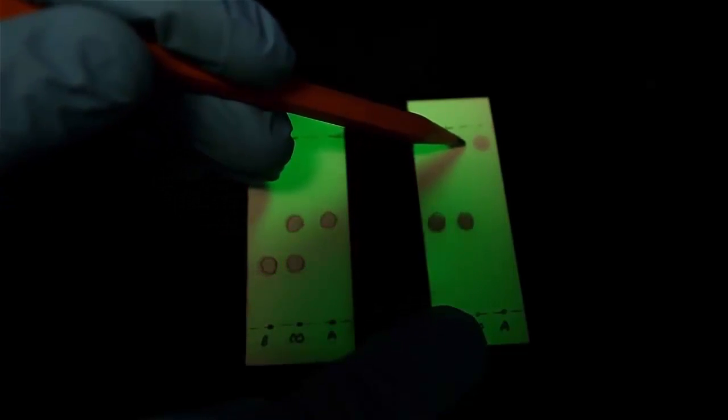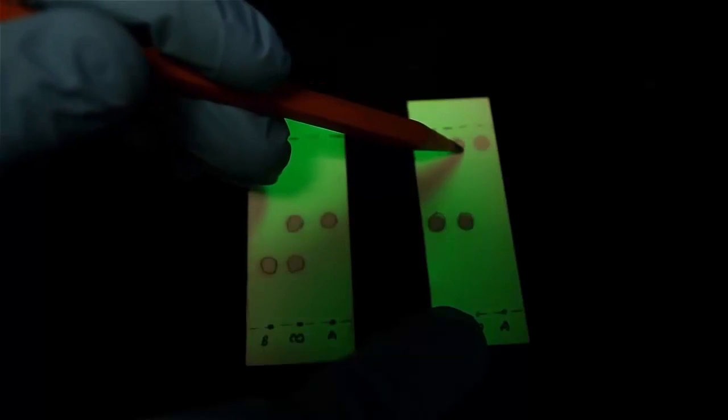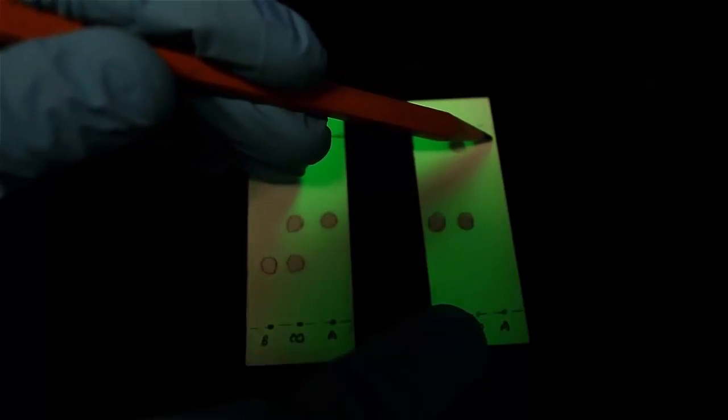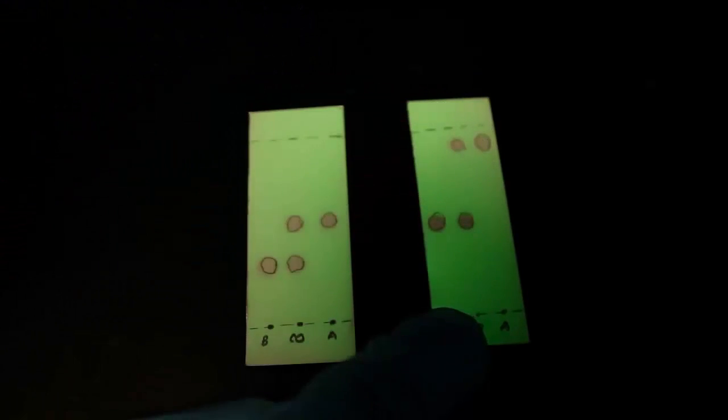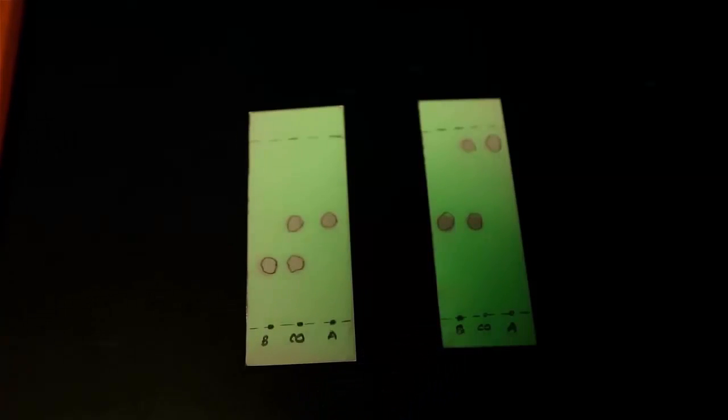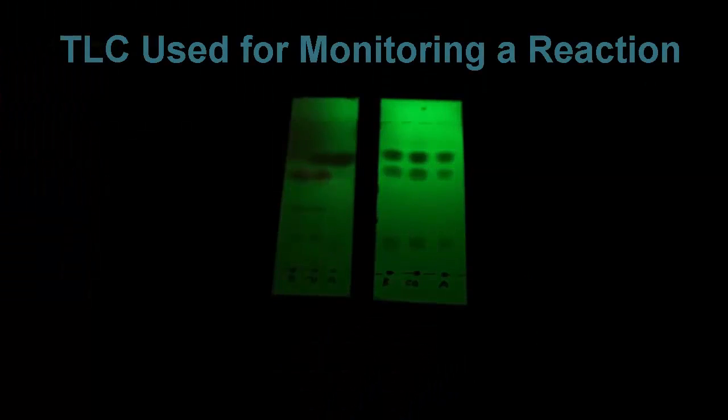Any good TLC plate will have a co-spot. It serves as a reference point and a comparison for your product and your starting material. Also, it is an indication as to whether or not your TLC plate was made correctly. If properly made, the co-spot should have one spot for each corresponding sample.